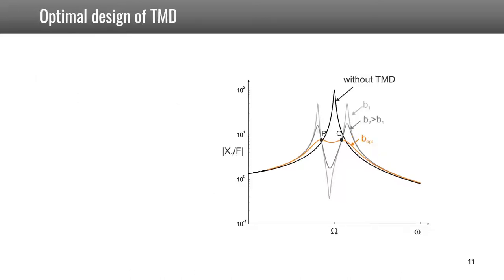In 1954, Den Hartog proposed a way to tune optimally the damper by trying to set points P and Q at the same height and finding the optimal B which would make the curve be maximum at points P and Q. He found analytically that to have P and Q at the same height, you have to have a ratio of frequency of 1 over 1 plus mu. So it is not exactly the same natural frequency, but as the mass ratio is usually small for a device that you add, this is close to 1.